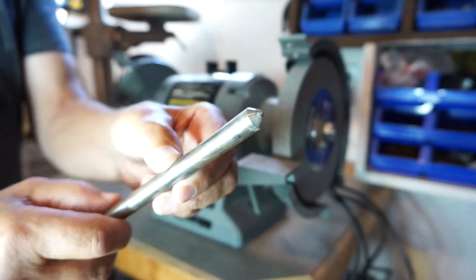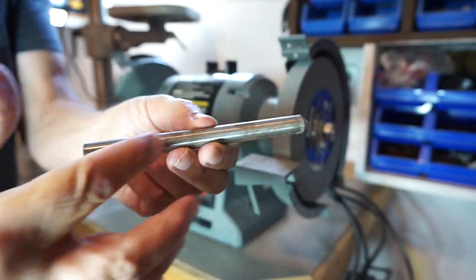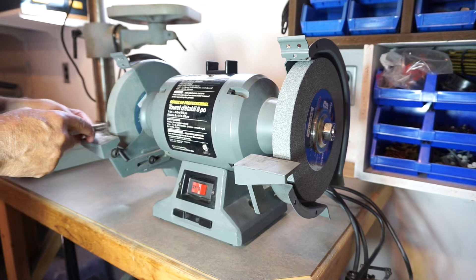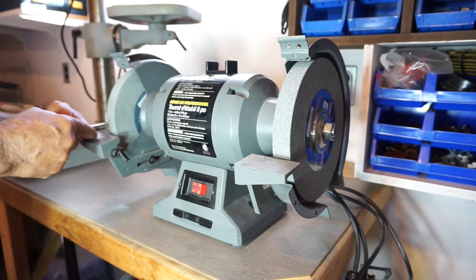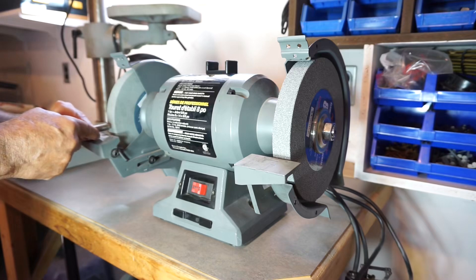For that, you need a single point diamond, like this two carat that I picked up on Amazon. Notice this long shank. The idea behind that is to draw this across the wheel very lightly, only hitting the high spot. But, for that, you need a guide tool.